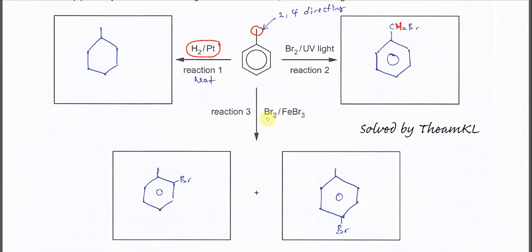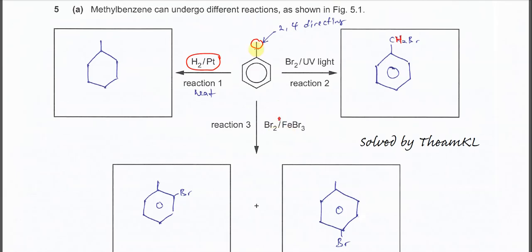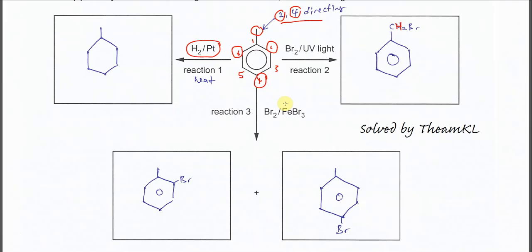For reaction three, bromine with iron bromide catalyst. The methyl group is a 2,4-directing group, so halogenation on the benzene ring occurs at the second and fourth positions. The possible products from this halogenation are 2-bromomethylbenzene and 4-bromomethylbenzene.